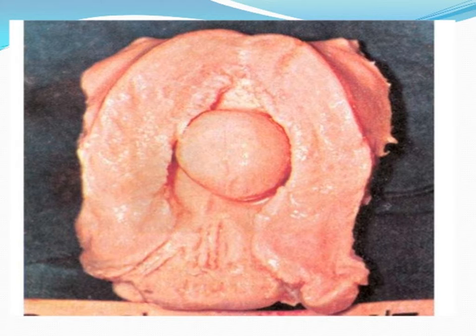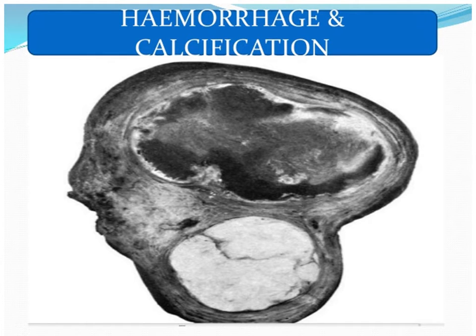These pictures show some of the complications just discussed: this is a calcified fibroid — the color is absolutely white and it is hard. This one shows hemorrhage inside the fibroid with visible blood collection inside it.